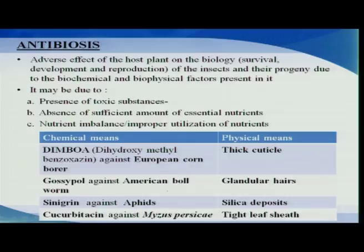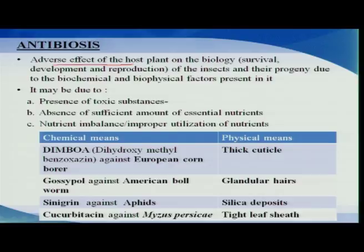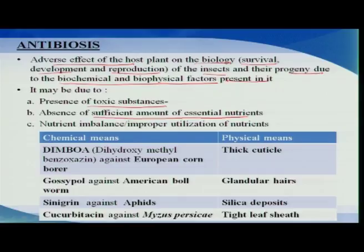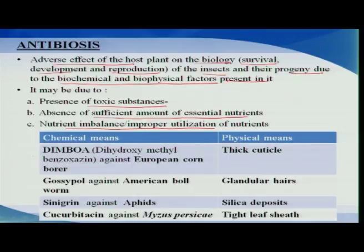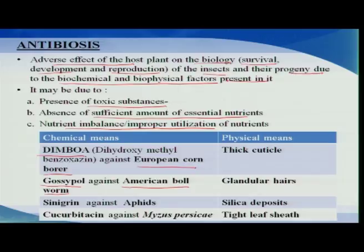Coming to the next mechanism: antibiosis. Antibiosis can be defined as an adverse effect of the plant on the biology of an insect — with respect to survival, development and reproduction of the insect and its progeny — due to certain biochemical and biophysical factors present in the plant. It may be due to the presence of toxic substances, absence of sufficient essential nutrients, nutrient imbalance, or improper utilization of nutrients. Examples include DIMBOA, which acts as an antibiosis agent against the European corn borer, and gossypol content in cotton, which is an antibiotic factor against the American bollworm. Similarly, sinigrin is a compound that deters aphids, and cucurbitacin acts against certain aphid species.